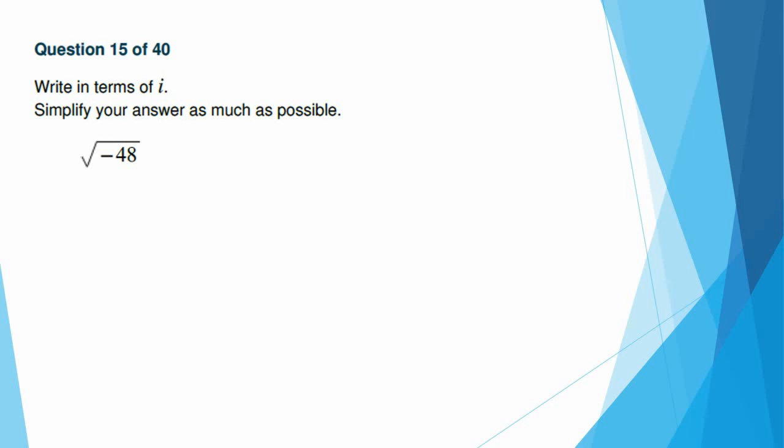Number 15, write in terms of i. So I know I can rewrite this as negative 1 times 48, which means the square root of negative 1 times the square root of 48, which is i square root of 48. But I'm not done. Remember, I have to find if there's anything that's evenly divisible by 48 that is a perfect square. And I know 4 is, but remember, we need the biggest perfect square. So I'm going to recognize that 16 times 3 is also 48. So this gives me i times the square root of 16 times the square root of 3. And we all know the square root of 16 is 4, so 4i square root of 3.